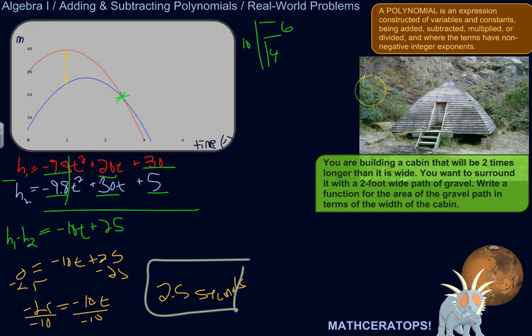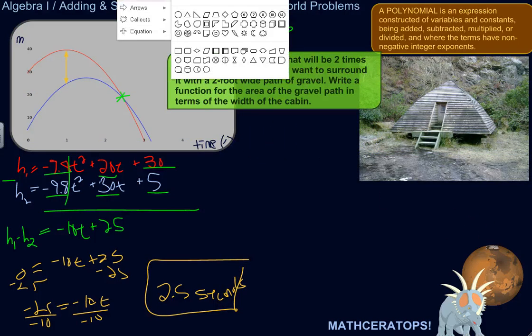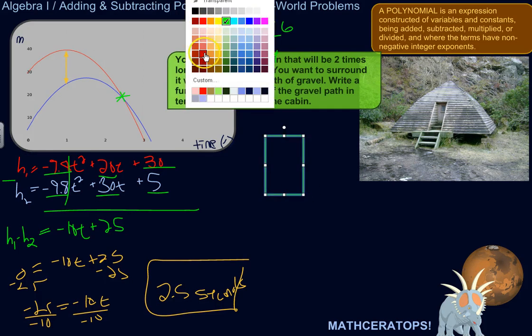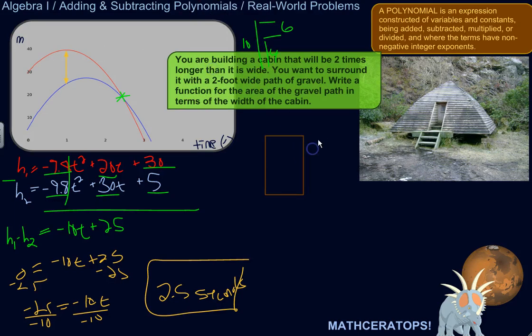Alright, let's look at this second example. Suppose you are building a cabin that will be two times longer than it is wide. So I'm going to draw a diagram here. Let's move this up here. So I want to build a cabin that's two times longer than it's wide. Let's make it brown because it's a cabin. You want to surround it with a two foot wide path of gravel, you know, maybe to catch the rain runoff or something like that.